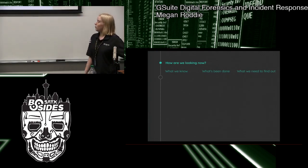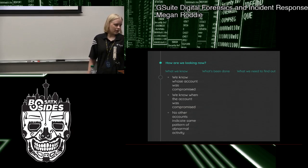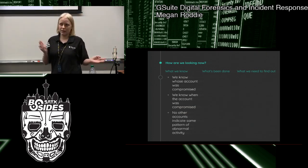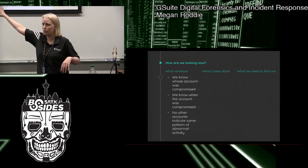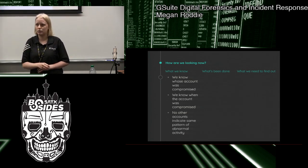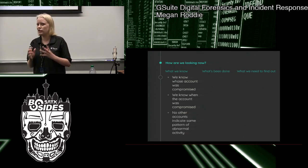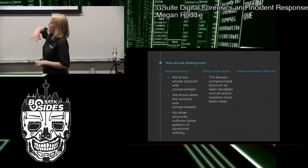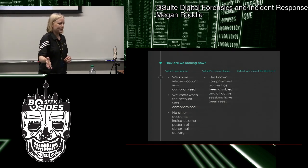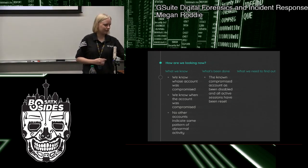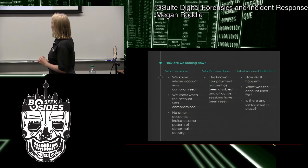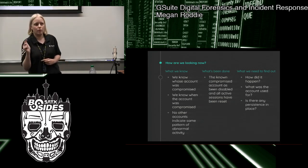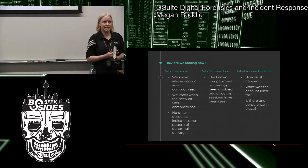We know whose account was compromised, and we know when it was compromised. The strange, abnormal, overseas logins are only happening with this one account, so there's a good chance this is the only account compromised. We've disabled the known compromised account, done a password reset in preparation for re-enabling it, and reset every existing session. We still need to know: how did the attack happen, what was the account used for once they were in, and was there any persistence in place?